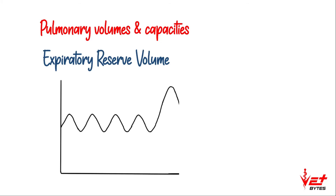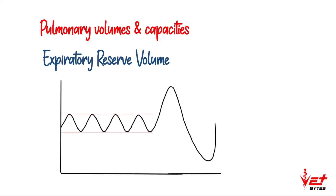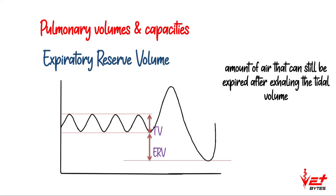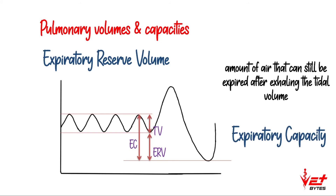Next is expiratory reserve volume. With a forceful expiration, we know this is the tidal volume, and the volume below the tidal volume is referred to as expiratory reserve volume — the amount of air that can still be expired after exhaling the tidal volume. Similarly, the sum of both tidal volume and expiratory reserve volume is called expiratory capacity.